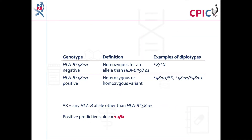Genotyping results for HLA-B*5801 are reported as either negative, for patients with no copies of the HLA-B*5801 allele, or positive, for patients with one or two copies of the HLA-B*5801 allele. It should be noted that the positive predictive value for HLA-B*5801 and allopurinol-induced SCARs is 1.5%. Therefore, a significant number of patients who carry the HLA-B*5801 allele will not develop SCARs as a result of allopurinol treatment.